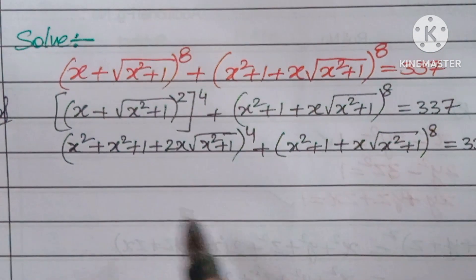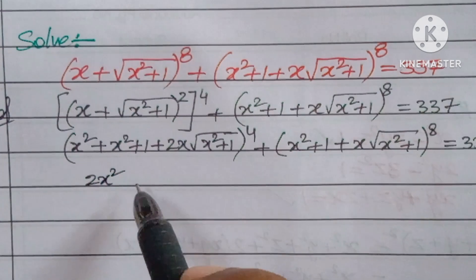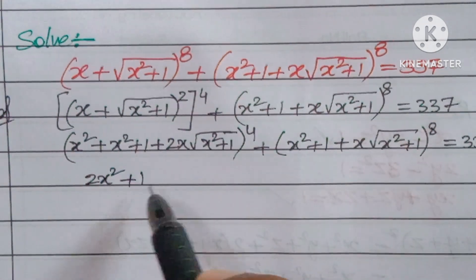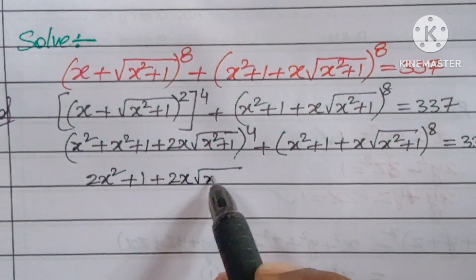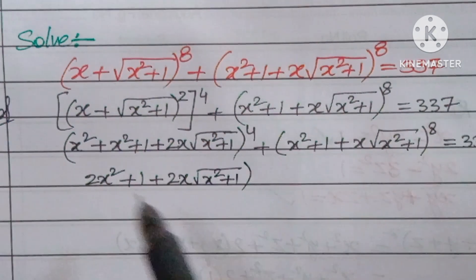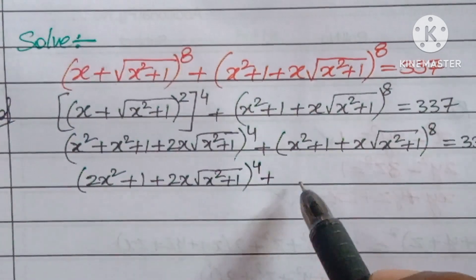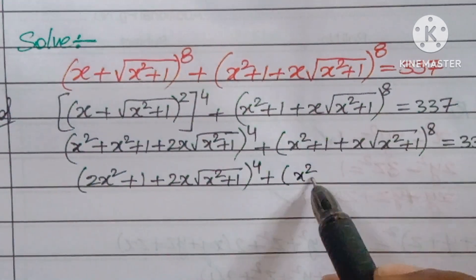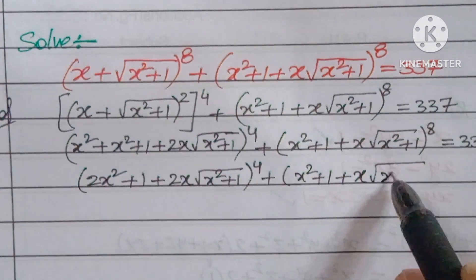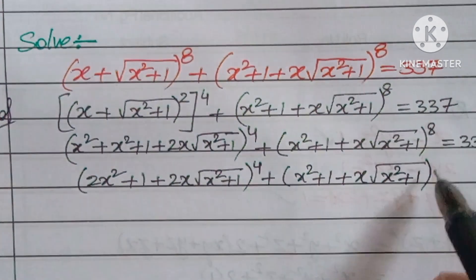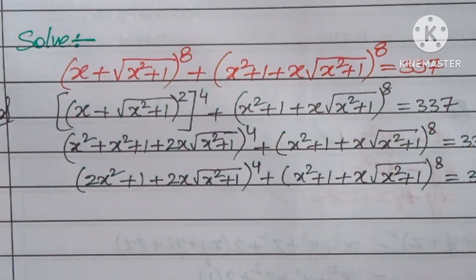Writing the simplified form: (2x² + 1 + 2x√(x² + 1))⁴ + (x² + 1 + x√(x² + 1))⁸ = 337.